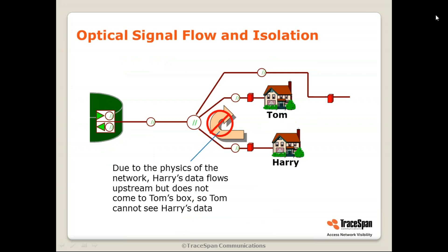As background to GPON transmission basics, let's start with one of the characteristics of the optical splitter. As you may remember, GPON has one unit — the OLT — in the service provider's point of presence. It goes through a splitter, sometimes more than one splitter, and then it goes to the customers. One of the important characteristics of this splitter is high isolation between the customers.